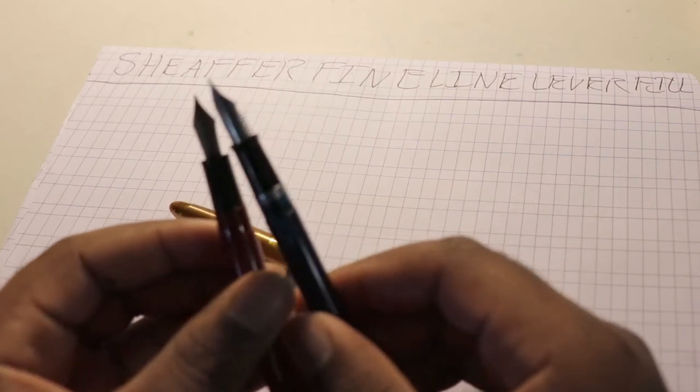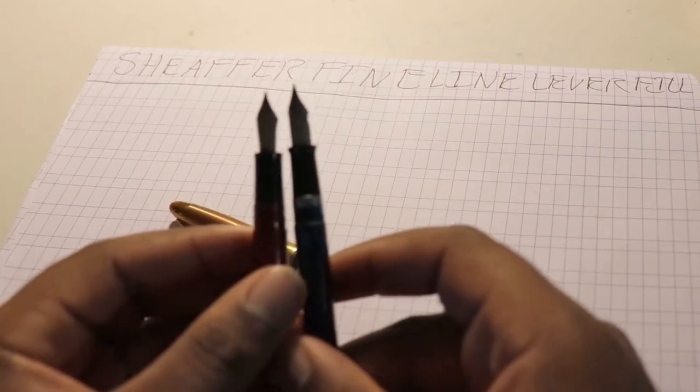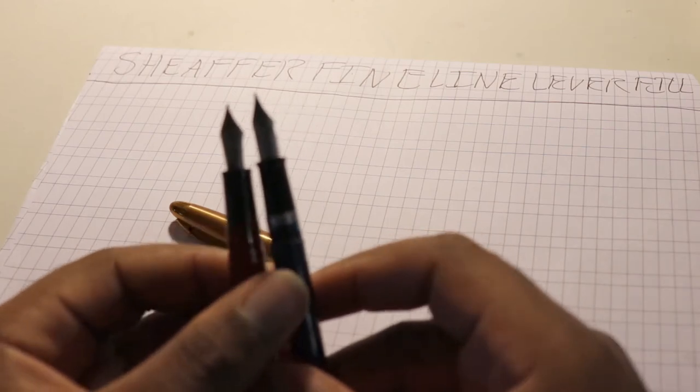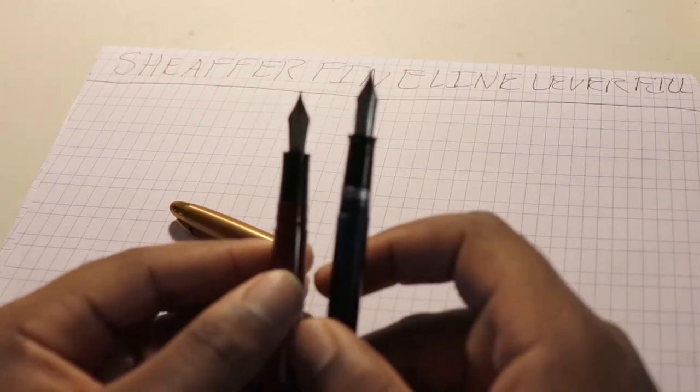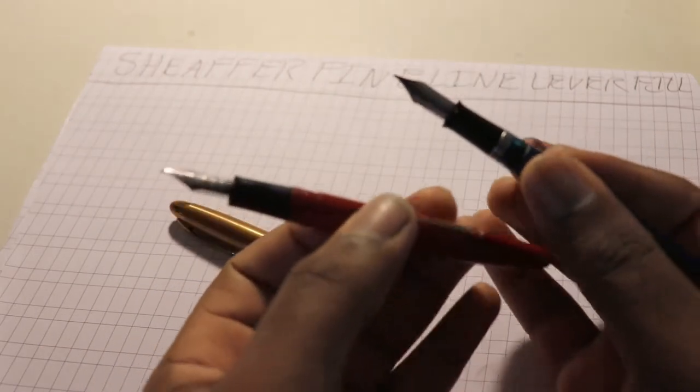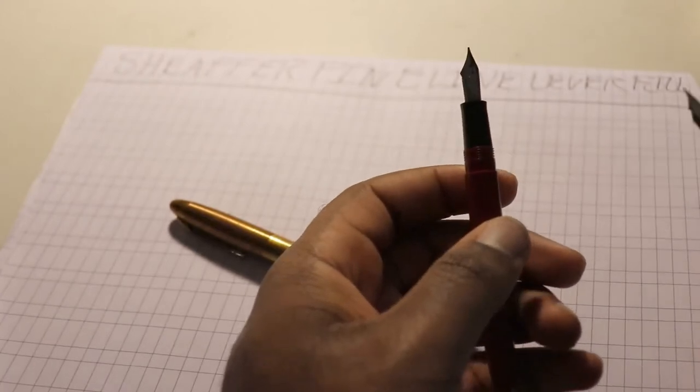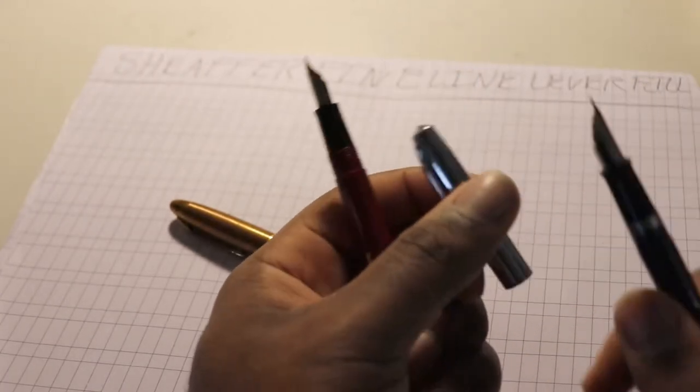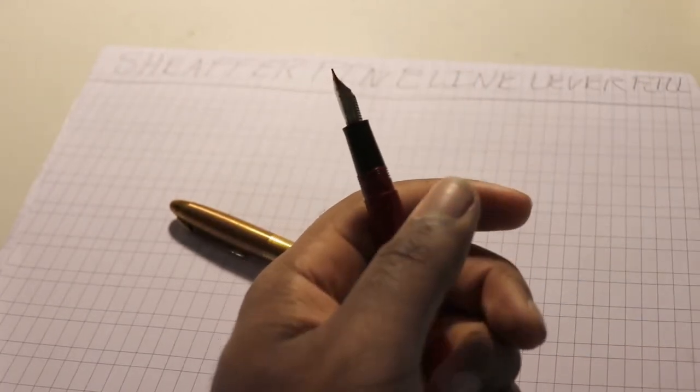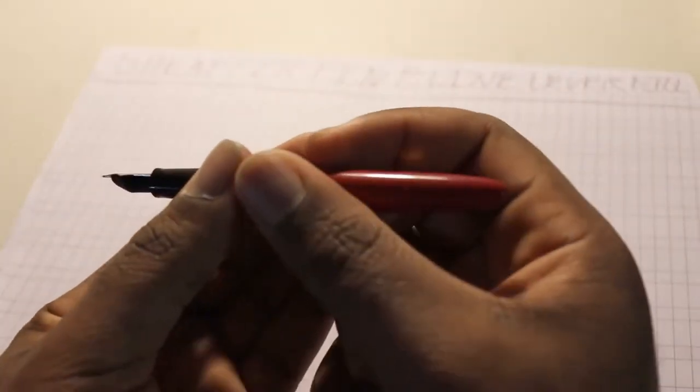Apparently, some of the latest models of Finelines are more so transitional fountain pens, which were made right before they started making the Schaefer cartridge pen here. And that's evident in some strange nib numberings. Besides that, I'm going to get on to a writing sample.